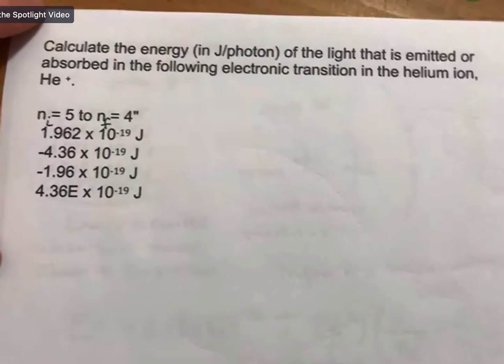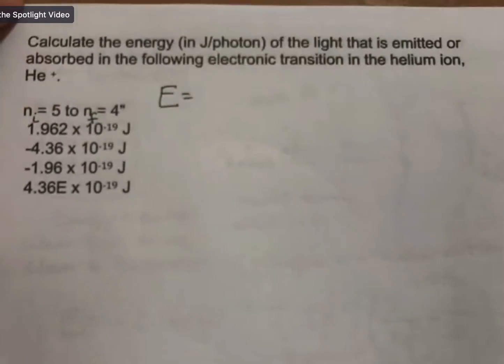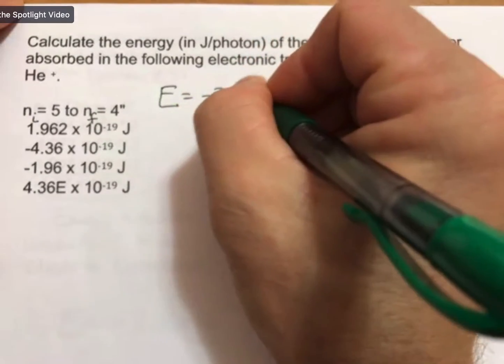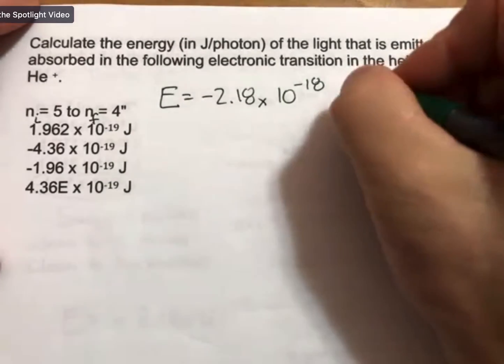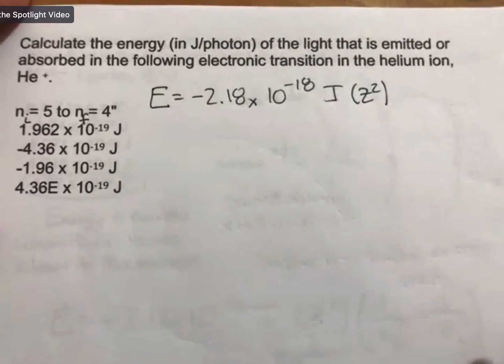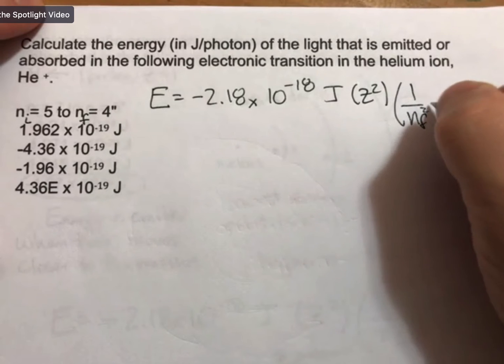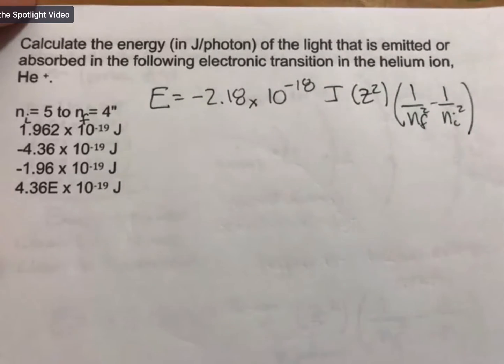So let me write that same equation for you. E equals minus 2.18 times 10 to the minus 18 joules times z squared times 1 over n final squared minus 1 over n initial squared. So it's the same equation.